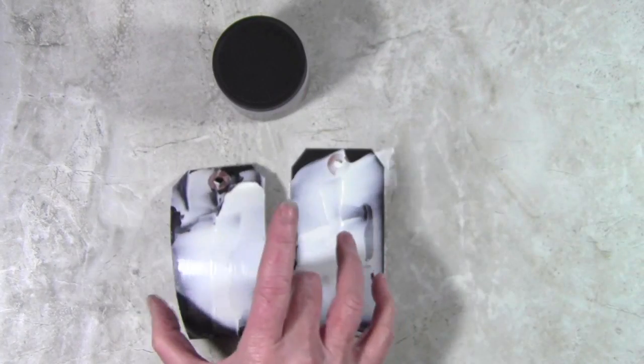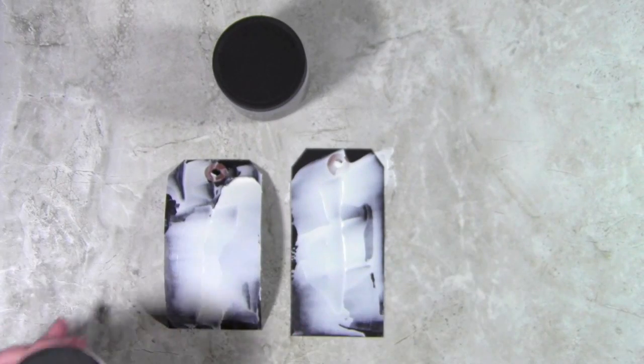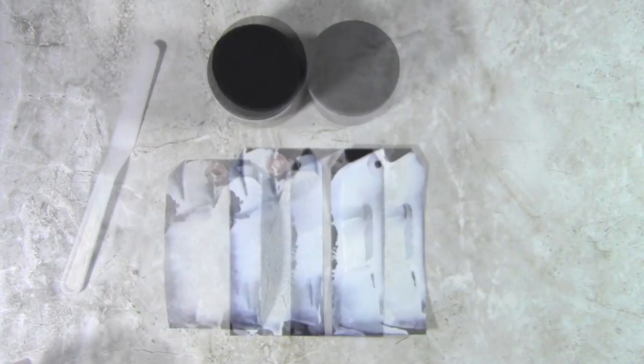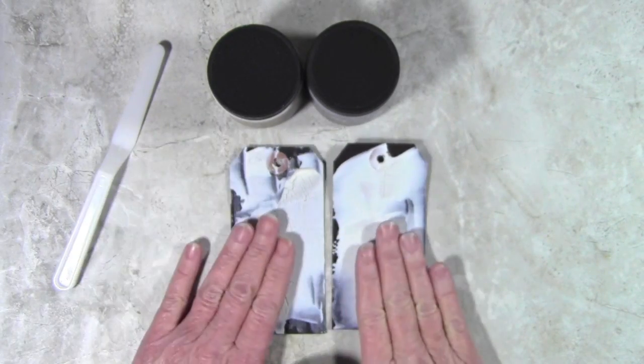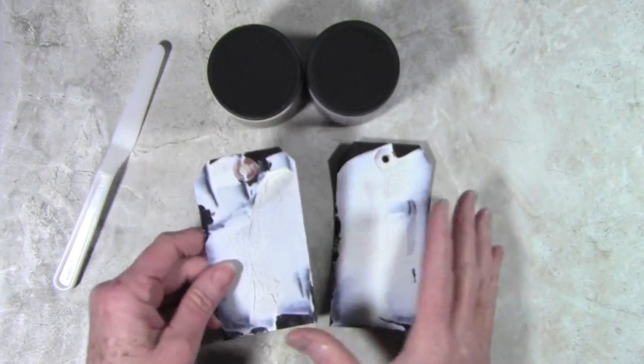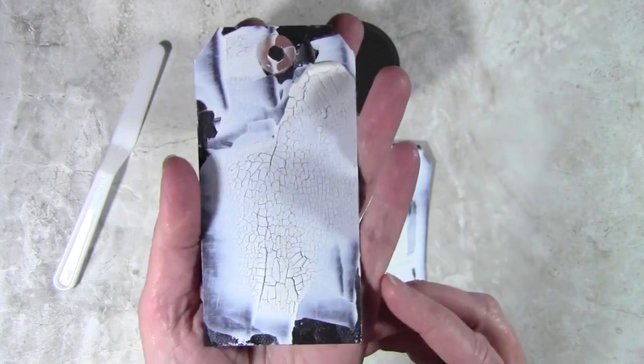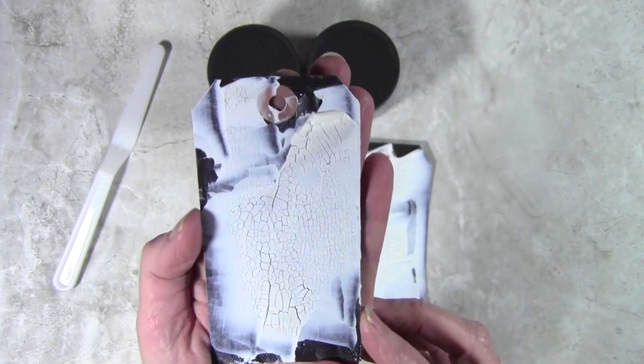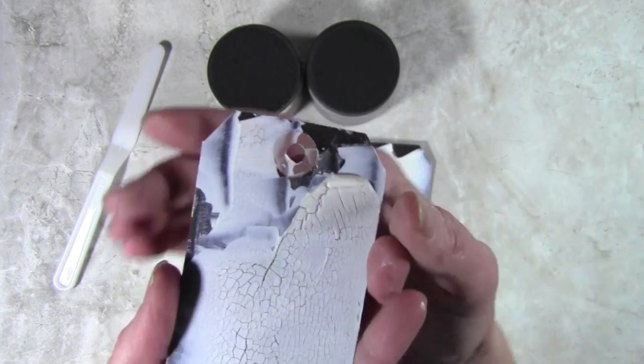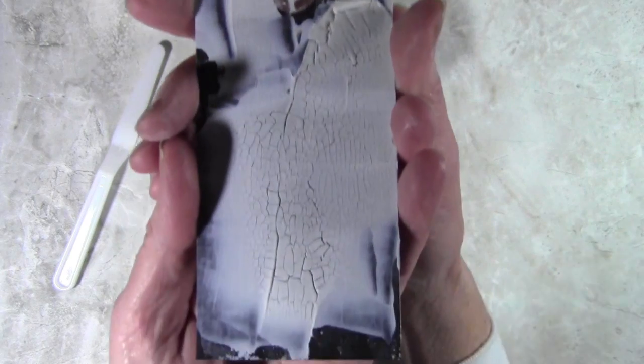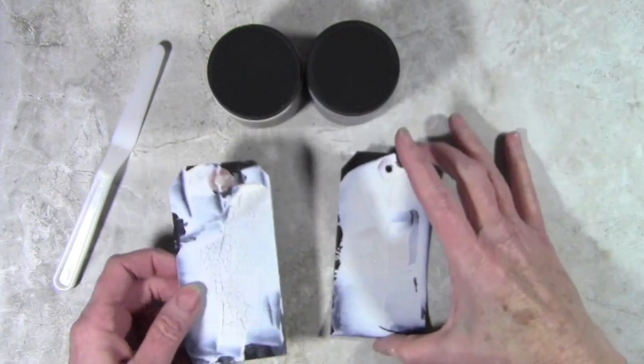Now I'll let these dry and we'll check out what the crackle looks like when we're done. Okay, these are dry to the touch and I'll go ahead and start looking at this first one which has the silver underneath, and it has a really nice crackle. It also has really small crackle in those thinner areas of the paste and really thick crackle in the really thick areas of the paste.